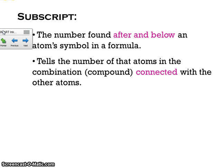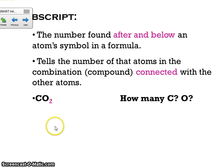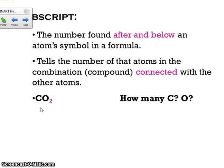The second-to-last topic is subscripts. A subscript is a small number that comes after the symbols, and it tells you how many of each atom are in that compound. Here's an example: CO2. The little 2 down here is the subscript. We ask how many C's and how many O's are in there. If there's no subscript written after the C, that means there's just one. The subscript only applies to the symbol it comes directly after — that 2 does not apply to the C, only to the O. So we have one C and two O's.